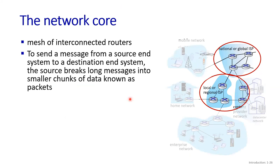Having examined the internet's edge, let us now delve more deeply inside the network core, which is the mesh of packet switches and links that interconnects the internet. These links denote the physical media we studied in our last lecture — they can be guided or unguided physical media. In our last lecture we studied the network edge, which included end systems, end devices, and applications. Today we are at the network core, which is the interconnected routers.